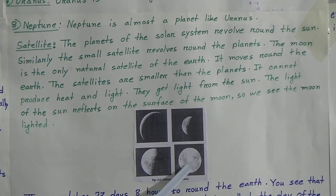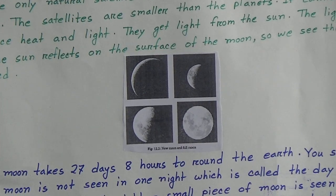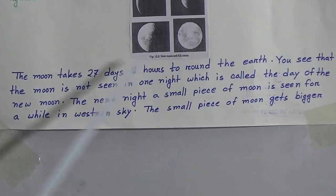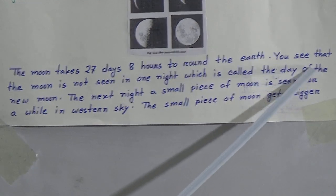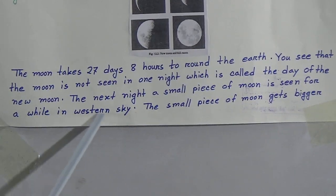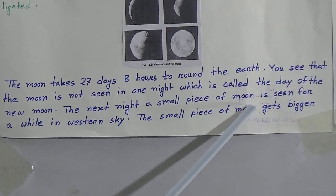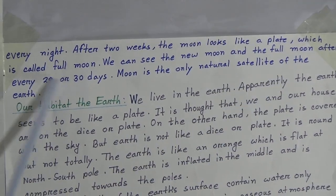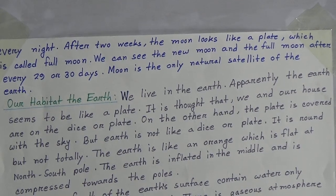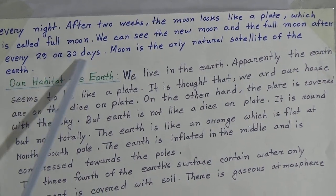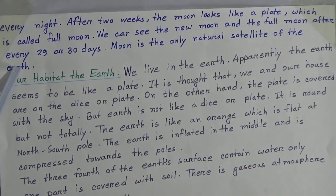Here is a picture — you can see a full moon. The moon takes 27 days and 8 hours to complete one round. The moon is not seen on one night. The next night, a small piece of moon appears and gets bigger every night. After two weeks, the moon looks like a plate, which is called a full moon. After every 29 or 30 days, you can see the new moon and the full moon. The moon is the only natural satellite of earth.